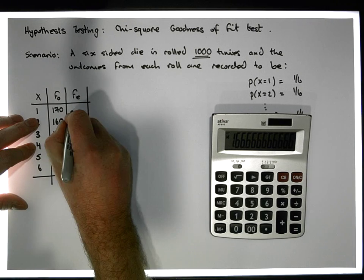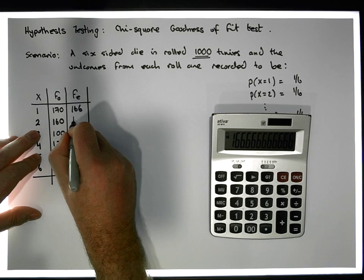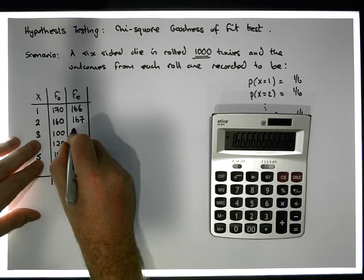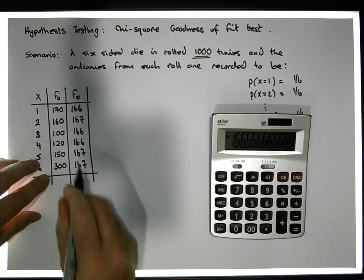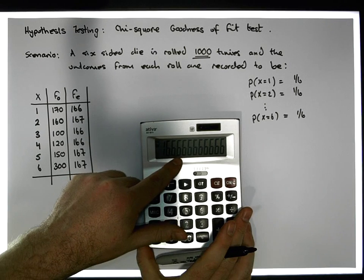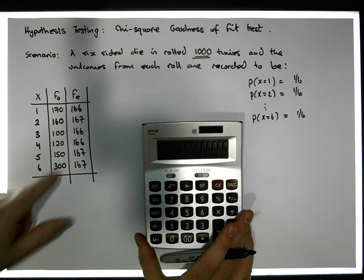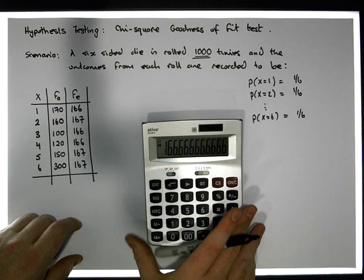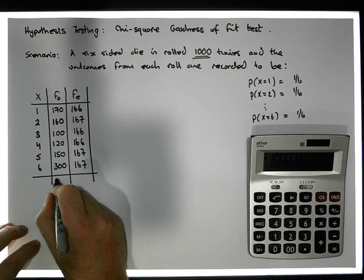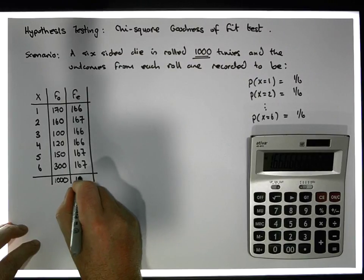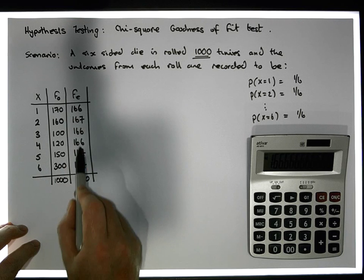We'd expect that the 2 would also occur 167 times, the 3 would occur 166 times, the 4 would occur 167 times, the 5 would occur 167 times, and the 6 would occur 167 times. I'm rounding up and down here - we can't represent it as 166.66, it has to occur a certain number of times. The total number of rolls we've observed is 1000, and the total expected is also 1000.